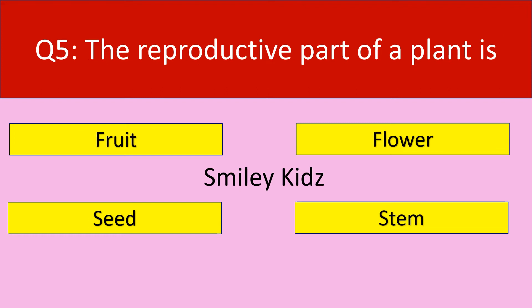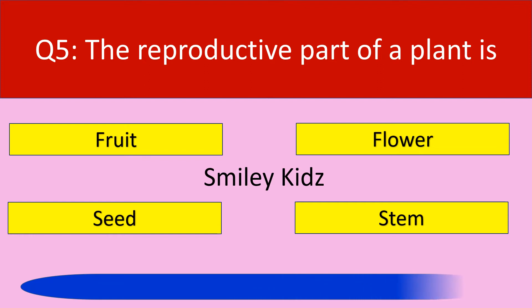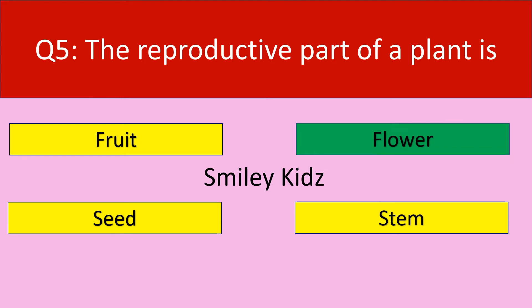Question number 5. The reproductive part of a plant is. Options are: fruit, flower, seed, stem. Your time starts now. Your time is up. The correct answer is flower.